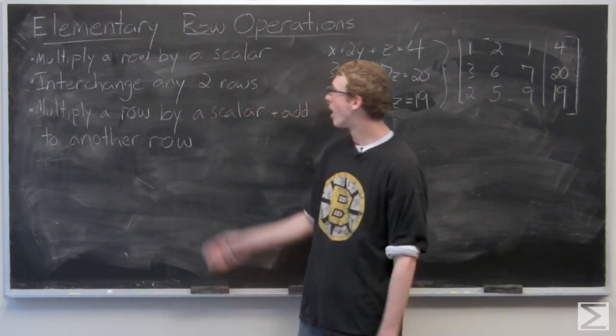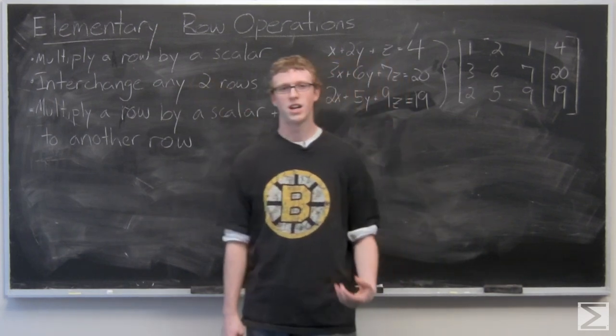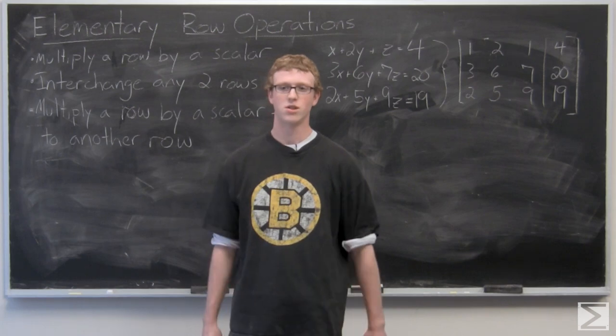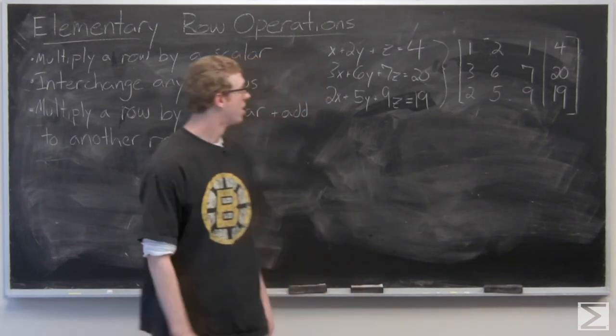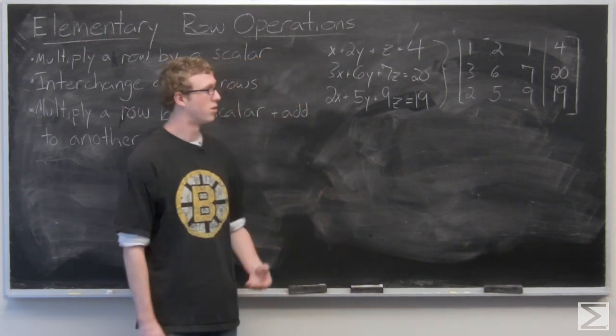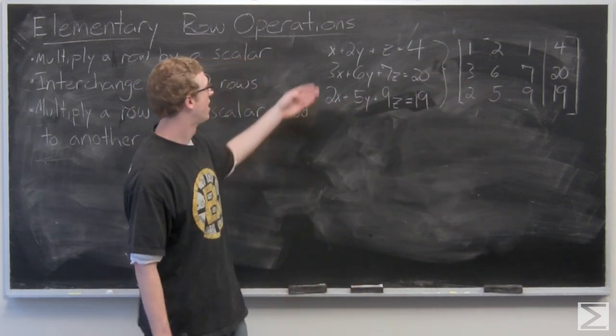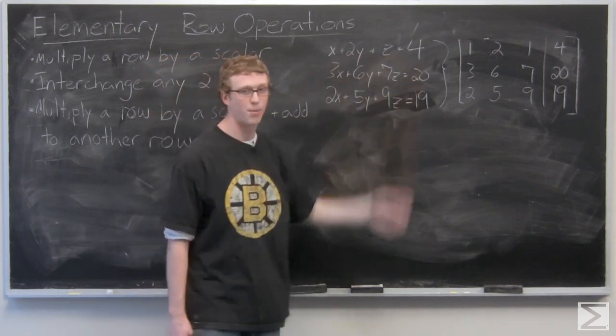The elementary row operations: you can multiply any row of a matrix by a scalar and it won't change the result of the equation. For example, we could multiply this first row of our coefficient matrix over here and all it would do is just multiply the top equation.